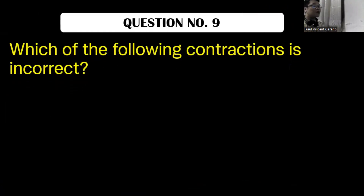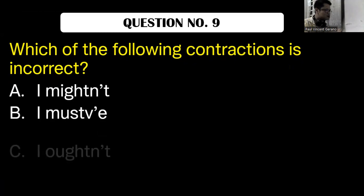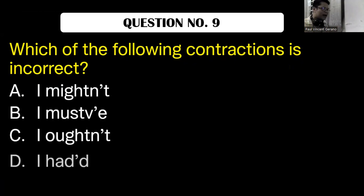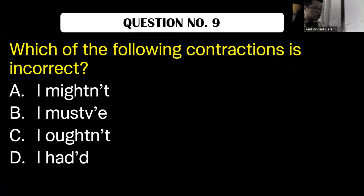Now let's go to question number nine. Which of the following contractions is incorrect? A, I mightn't. B, I must've. C, I oughtn't. D, I hadn't. Please write your answer in the chat box.